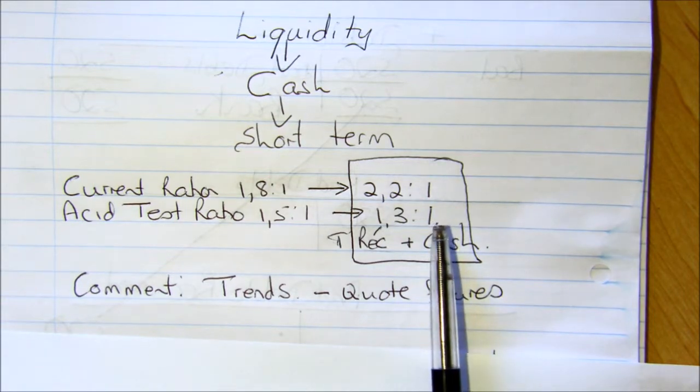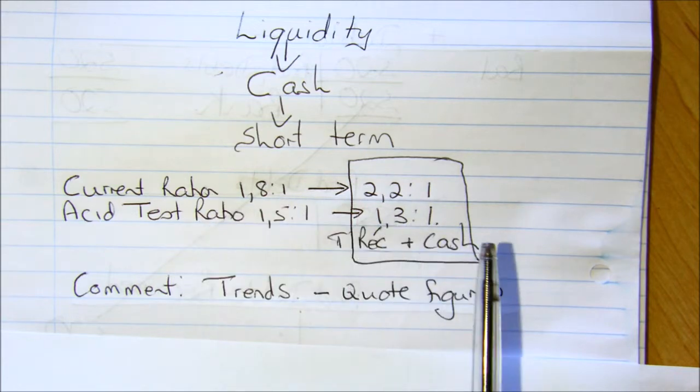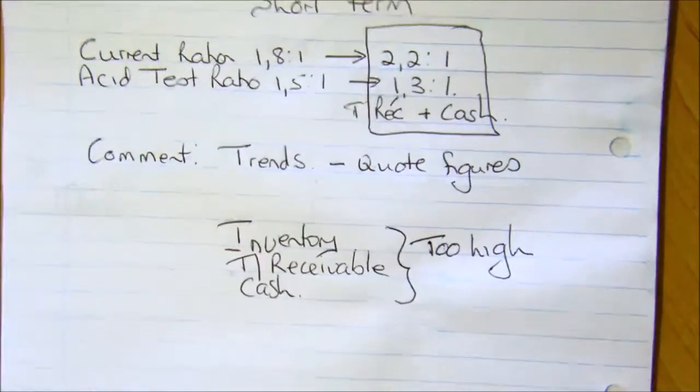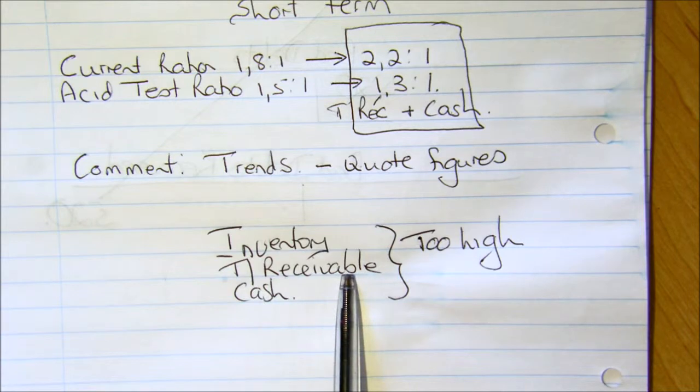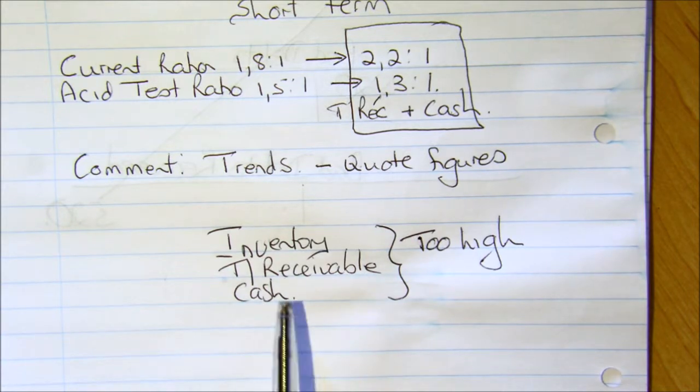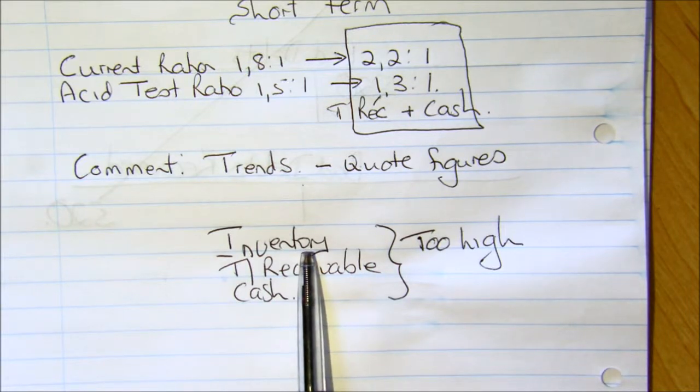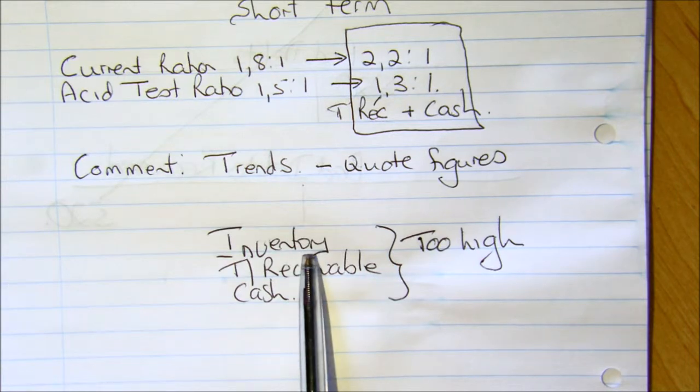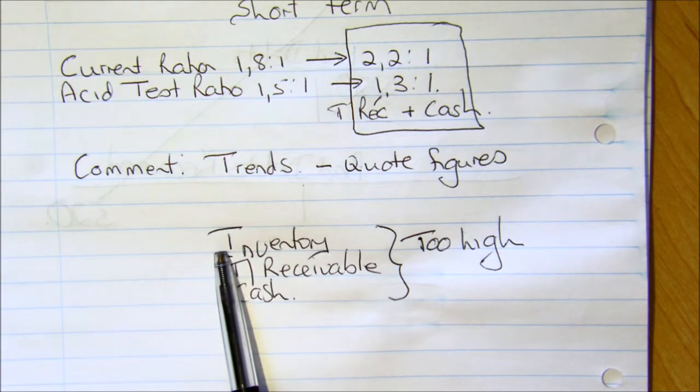But we need to go one step higher now. While we want to make sure we've got enough, we also don't want too much. Our current assets are broken up into our inventory, our trade and other receivables, and our cash. A business doesn't want too much inventory. Inventory can go off. It can go out of fashion. It can get damaged. It costs insurance. It costs storage.